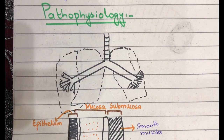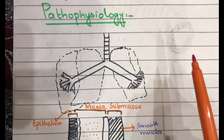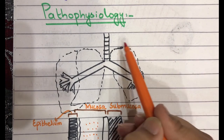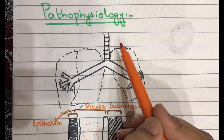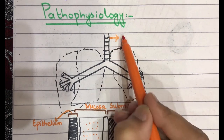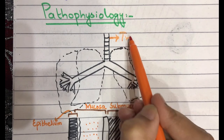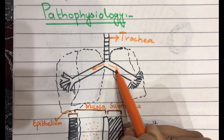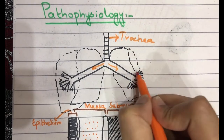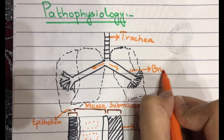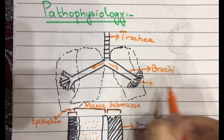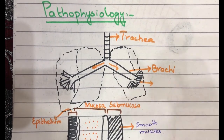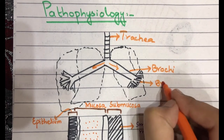Now, if we discuss the pathophysiology of asthma — why asthma occurs — we need to know that we have lungs: right and left lung. Inside the lung, the structures present are: first in the airway we have the trachea, from the trachea it leads to bronchi, and bronchi further divide into smaller branches which we call bronchioles.